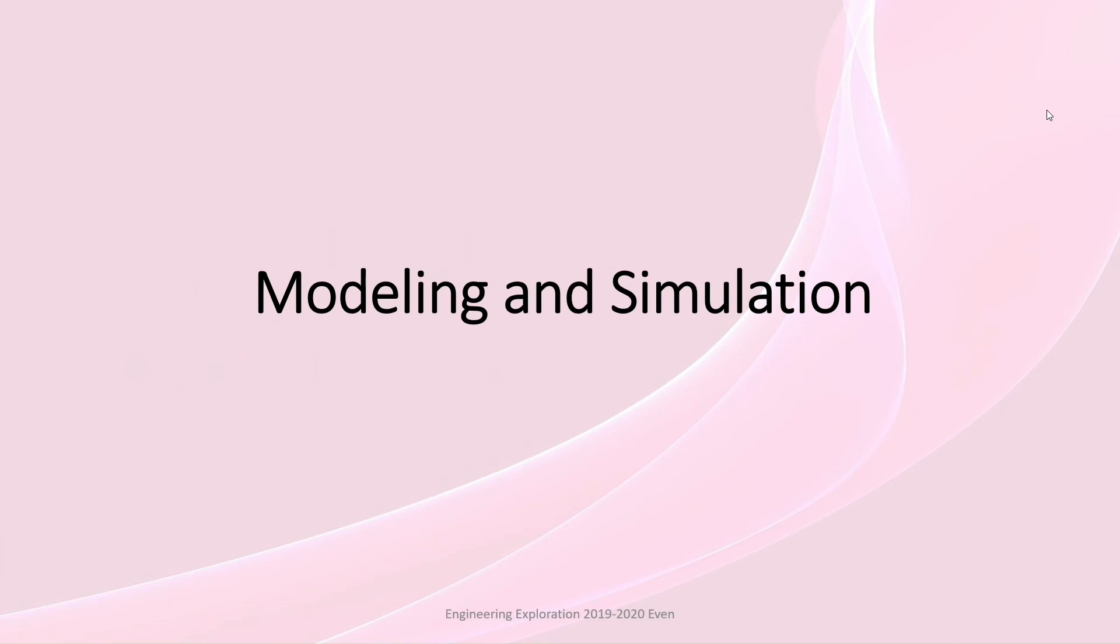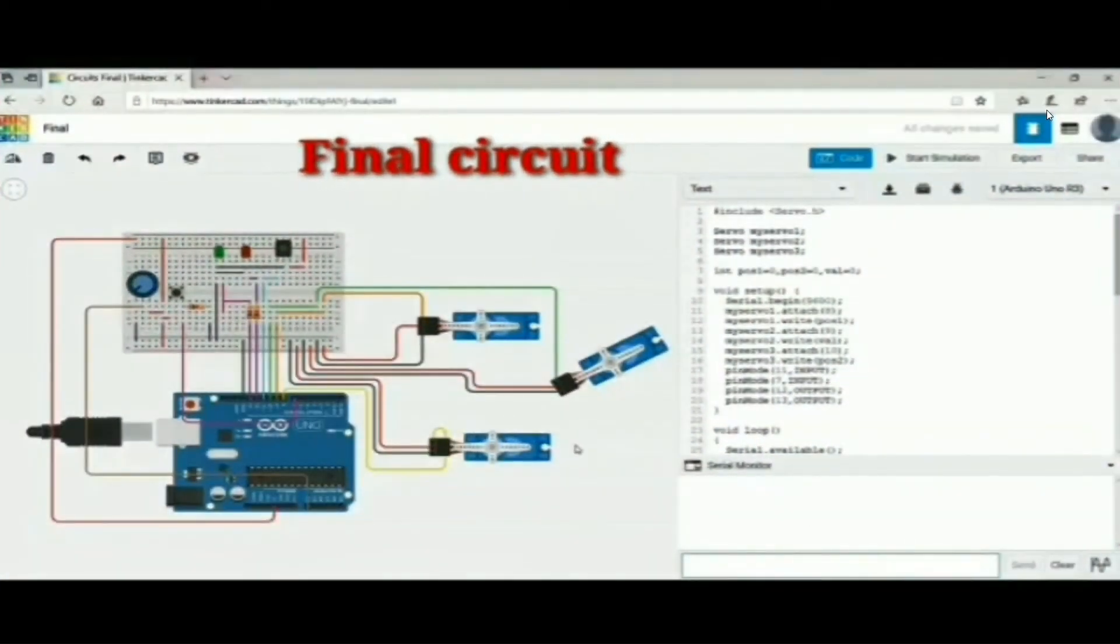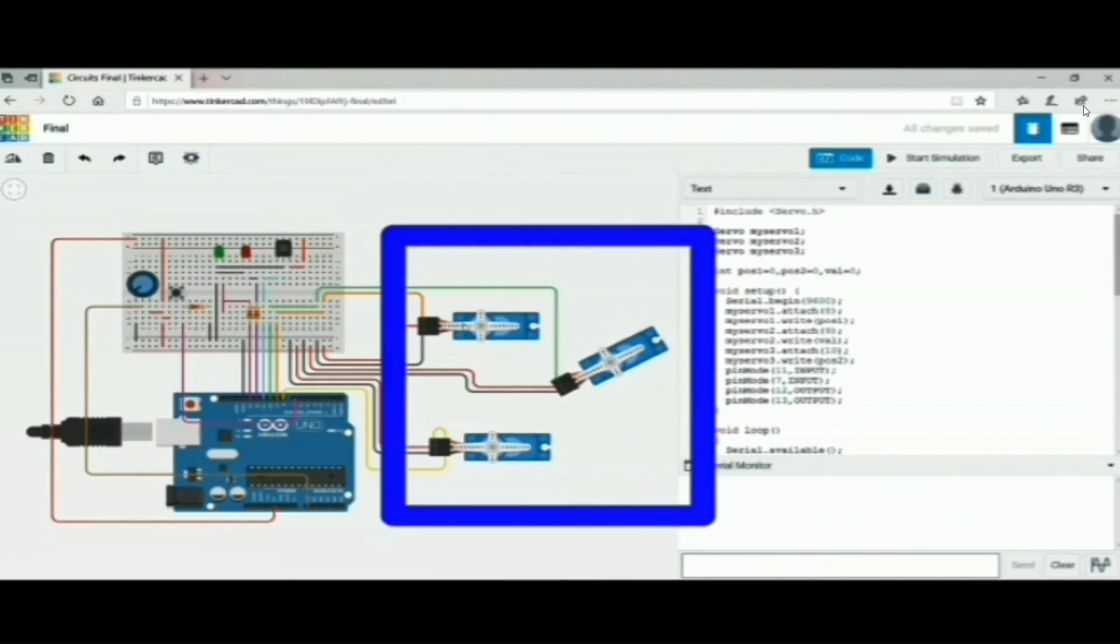Modeling and simulation. This is the final circuit of our project. It consists of Arduino board, one green LED to indicate that the machine is on or off, red LED to indicate the presence or absence of ball, one potentiometer, one IR sensor, one key or a button, and three servos.